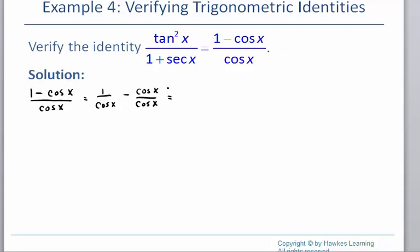When I look at 1 over cosine, I know that is equal to secant. Normally I wouldn't introduce secant if we're working in sines and cosines, but we notice our answer does have a secant in it, so I'm going to write 1 over cosine as secant. Then cosine over cosine equals 1. I notice that I want a fraction with a denominator of 1 plus secant x.